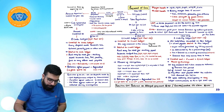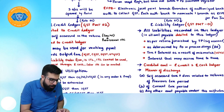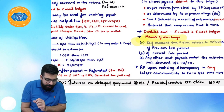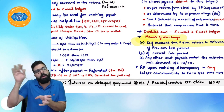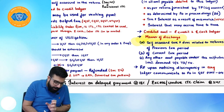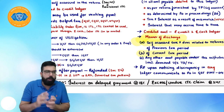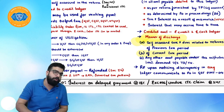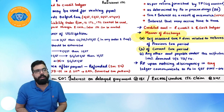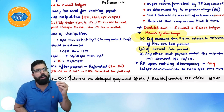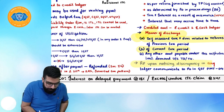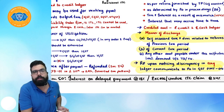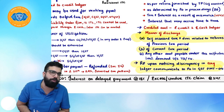Always remember the manner of discharge: first pay self-assessed tax liabilities and dues relating to the previous tax period, then any amount relating to the current tax period, then all other amounts due including demand order dues. If you notice any discrepancies, you have to file form PMT-04 to inform the officer.